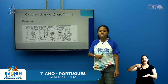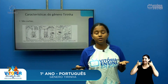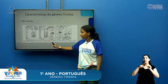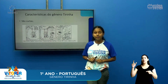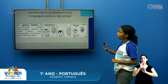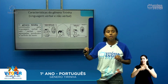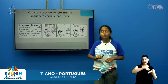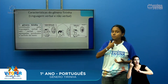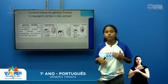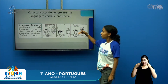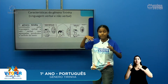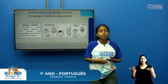Para a gente compreender as tirinhas, é importante observar a expressão dos personagens. Essa tirinha é curta — só tem três quadrinhos. O gênero tirinha é constituído pela linguagem verbal e pela linguagem não verbal. A linguagem verbal é aquela que a gente utiliza na fala e na escrita. A linguagem não verbal são os gestos e as expressões, que também falam muita coisa pra gente. Quando a gente quer interpretar uma tirinha, precisa prestar atenção tanto na linguagem verbal, naquilo que está escrito, quanto na linguagem não verbal — nas expressões e nas imagens que aparecem na própria tirinha.